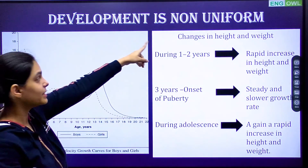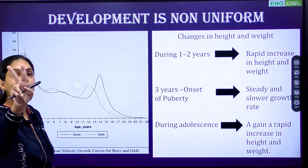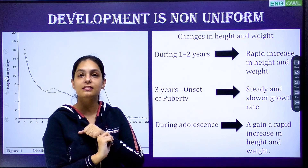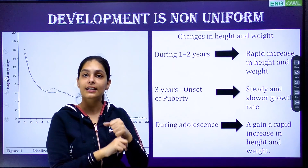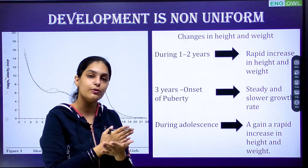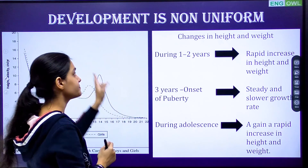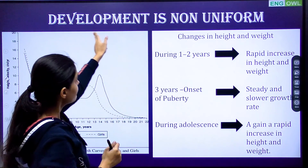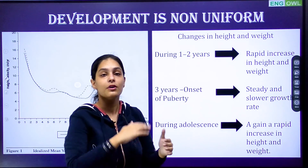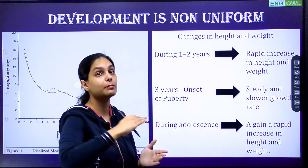The second principle is that development is a non-uniform process. It is not uniform — it is always different. The first principle was that it is a continuous process, always running slowly and gradually. Development is non-uniform, meaning it does not happen at the same rate at all times.